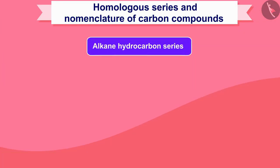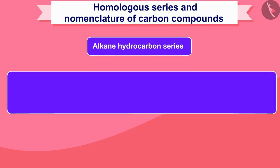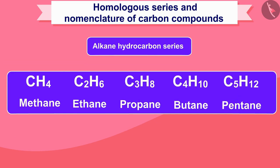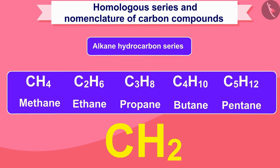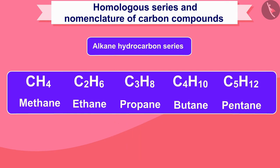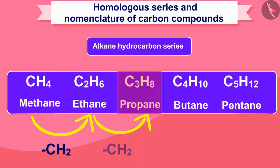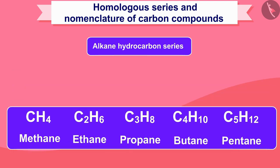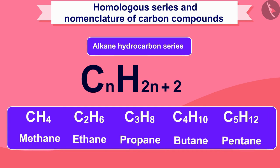The alkane hydrocarbon series are as follows: methane, ethane, propane, butane, pentane, etc. In moving from one unit to another unit, there is a difference of CH₂ unit.